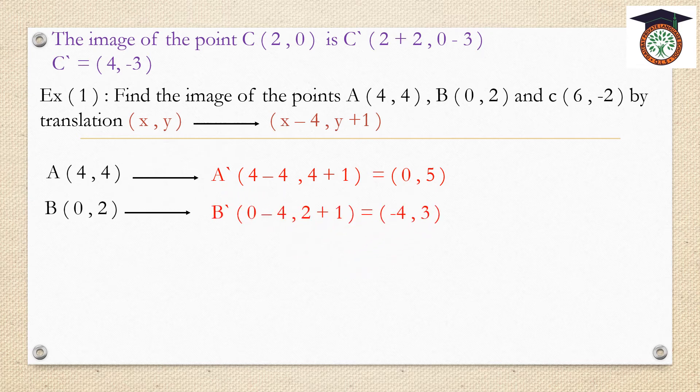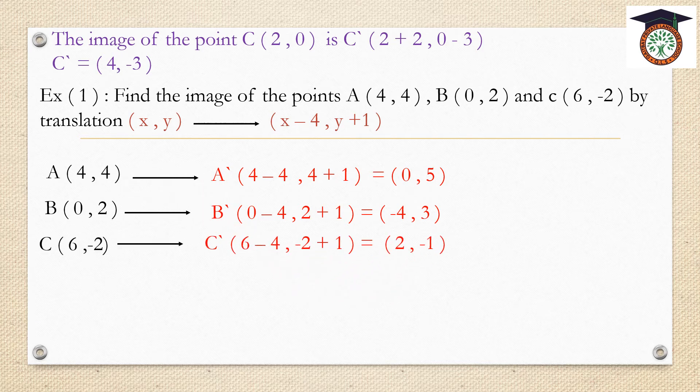For point B(0, 2): B dash is 0 minus 4 and 2 plus 1, which equals (-4, 3). For point C(6, -2): C dash is 6 minus 4 and -2 plus 1, which gives (2, -1).